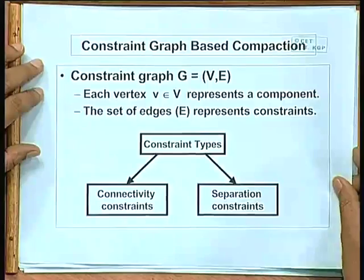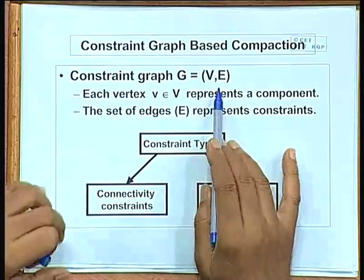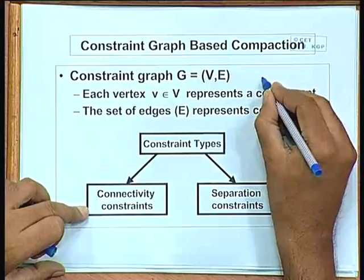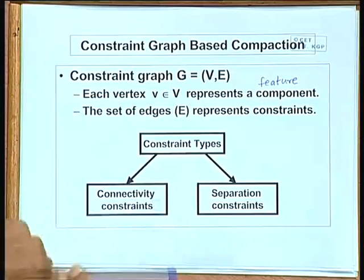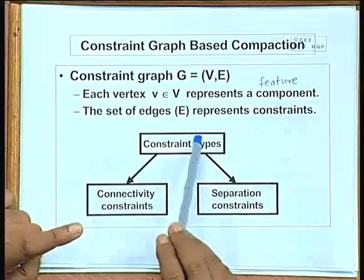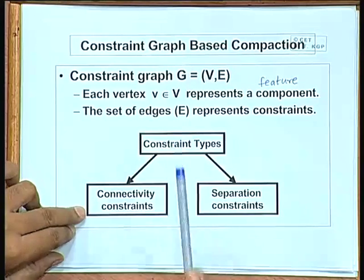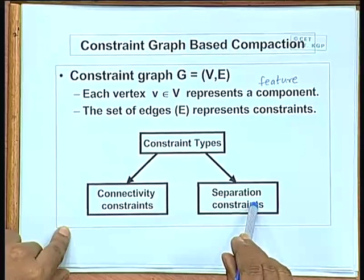Let us talk about constraint graph-based compaction — a fairly simple approach. This method says you first construct a constraint graph. In this constraint graph, each vertex is a feature or component, and two features which have some kind of constraint between themselves will have an edge connecting them. Constraints represented as edges can be with respect to connectivity or minimum separation.